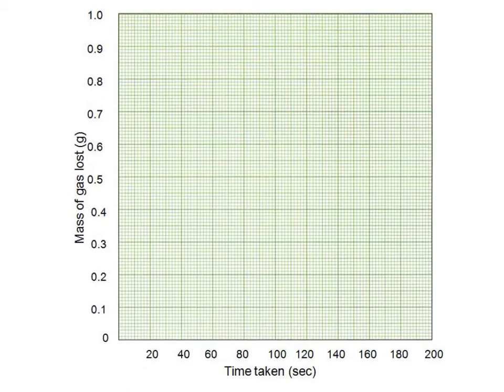We graph our data on a set of axes like this, with time along the bottom and the mass of gas lost along the side. Using large chips, for example, we might have a graph with a steady rate of reaction such as this. That would be the large chips.